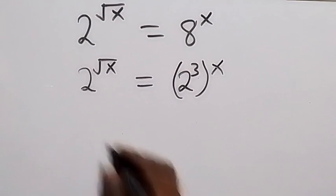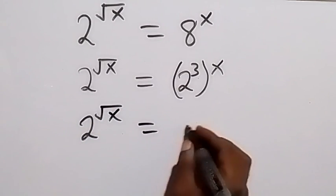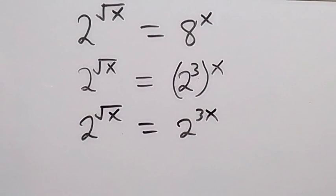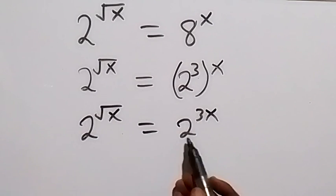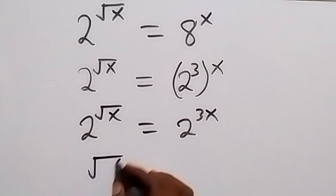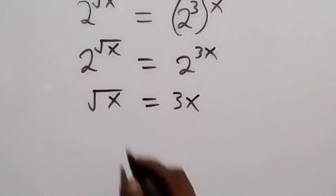And from the law of indices here, we have the base to be equal, then we can equate the power from here and there. That will be root x on this side equals to 3x. Remember we are finding the value of x.